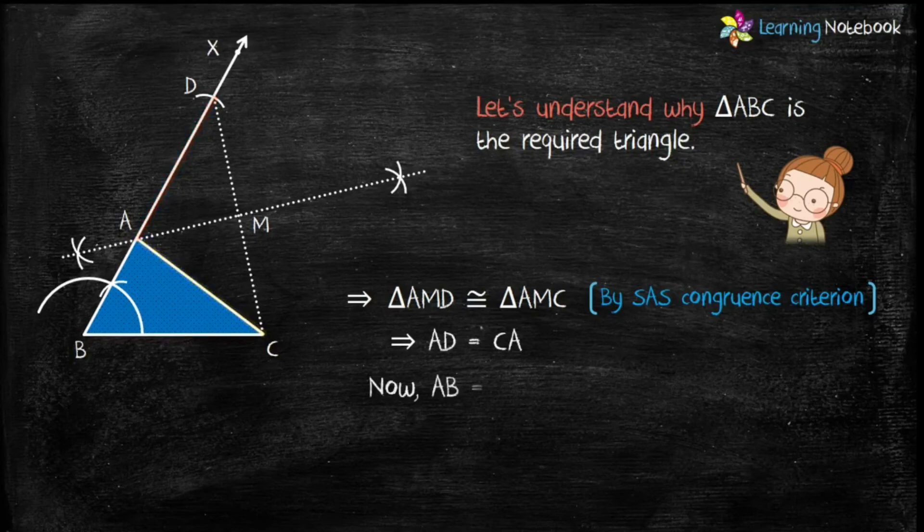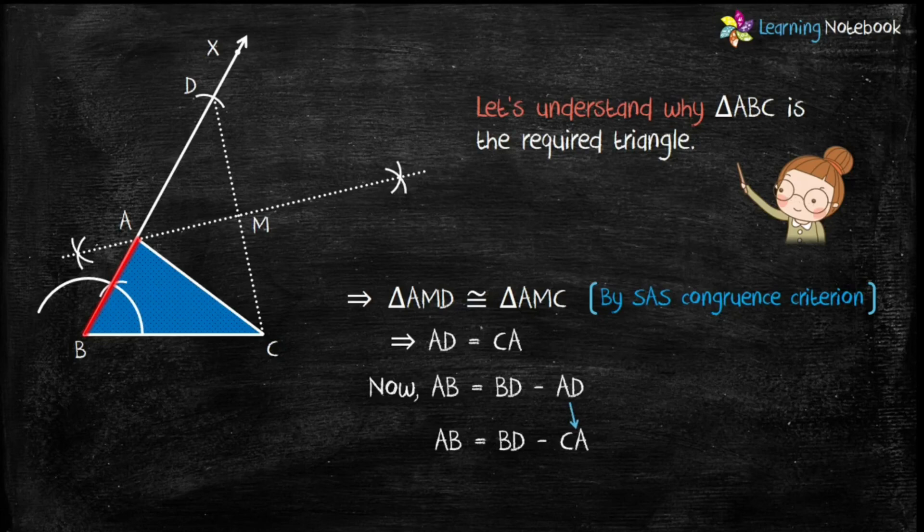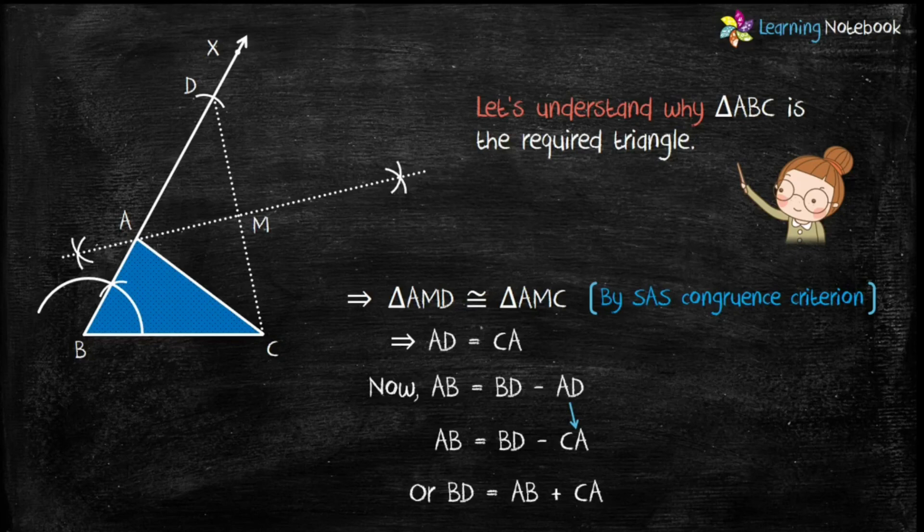Now, AB equals to BD minus AD. And AD equals to CA. Therefore, AB equals to BD minus CA. Or, we can say BD equals to AB plus CA. Or, BD equals to sum of other two sides of a triangle. Therefore, our construction is justified.